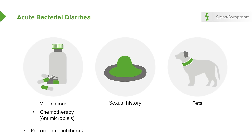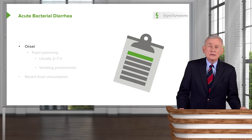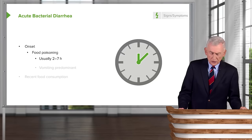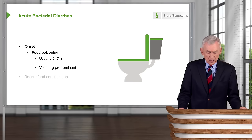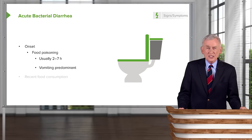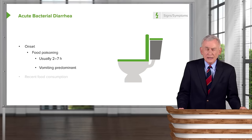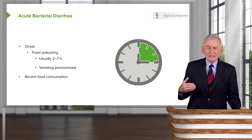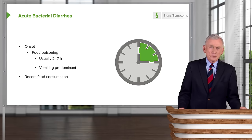We need to know whether patients have pets, as some zoonotic infections can be spread from pets to humans, and whether they're receiving any medications. To figure out the cause of diarrhea, it's useful to know about the onset. Food poisoning usually comes on pretty rapidly, within two to seven hours, and vomiting is predominant. The classic rapid one is caused by Staphylococcus enterotoxins — we need to know about recent consumption of things like chocolate eclairs, mayonnaise, or chicken salad at picnics.